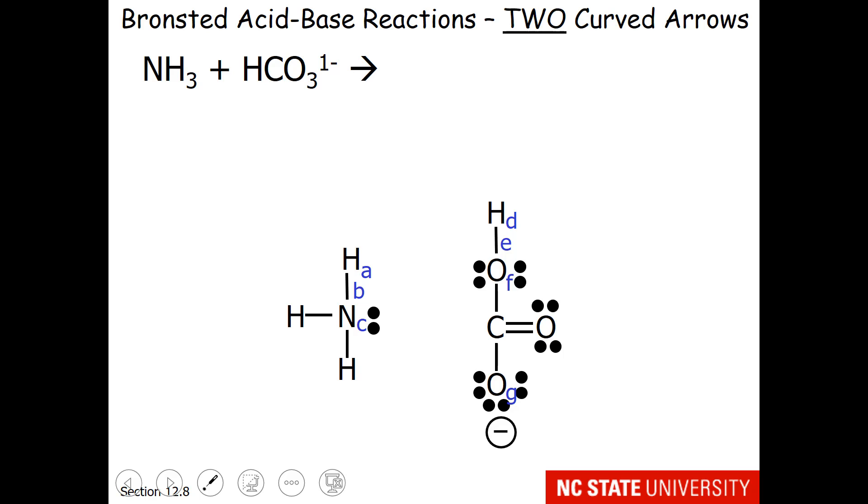So let's try another example and draw our capture and release arrows. Now students often get confused because they see this picture here has a lot of lone pairs and a lot of hydrogens. So before we even start to draw our arrows, we need to figure out which one is the acid and which one is the base.